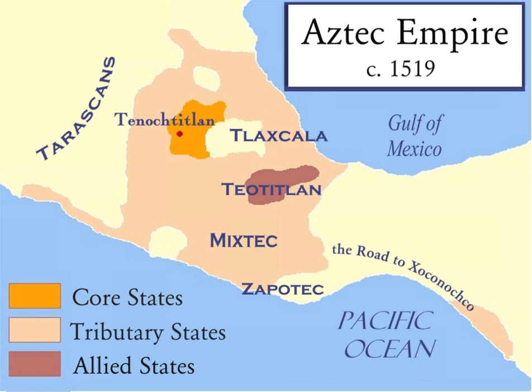Early dynastic Sumer was located in southern Mesopotamia with its borders extending from the Persian Gulf to parts of the Euphrates and Tigris rivers. By 2500 BCE the Indus Valley civilization, located in modern-day India, Pakistan and Afghanistan, had formed. The civilization's boundaries extended 600 kilometers inland from the Arabian Sea.